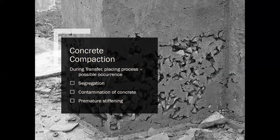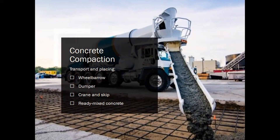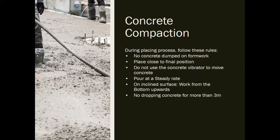During the concrete placing process, possible issues include segregation, contamination of concrete, and premature stiffening. Concrete can be transported by wheelbarrow, dumper, crane and skip, or ready-mixed concrete. Placing rules: do not dump concrete on the formwork, place close to the final position, do not use the vibrator to move concrete, pour at a steady rate, work from the bottom upwards on inclined surfaces, and do not drop concrete more than three meters, as this causes segregation — the rocks move through to the bottom.